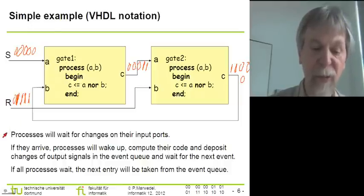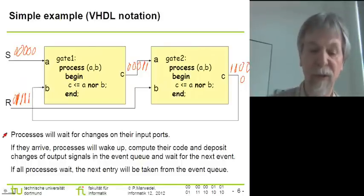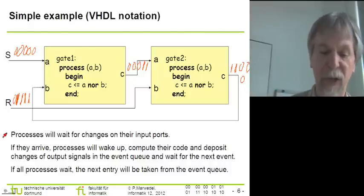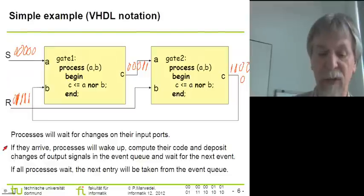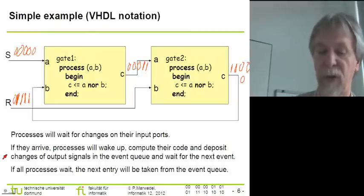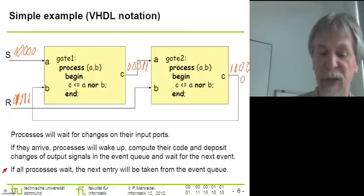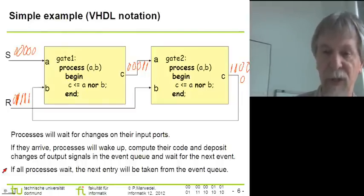Generalizing this example: processes wait for changes at their inputs. When changes arrive, processes wake up, compute their code, and deposit changes of output signals in the event queue, then wait for the next event. When all processes wait, we fetch the next entry from the event queue. That is exactly how I described the particular flip-flop example.